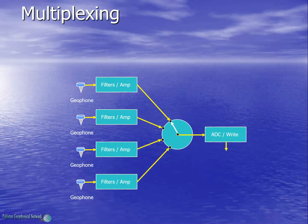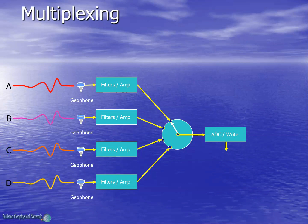We will now see what is multiplexing. For simplicity, we consider a seismic recorder of only 4 channels. The geophones are connected to their respective filters and amplifiers, which in turn are connected to the multiplexer. These are the 4 traces which will be digitized, labeled A, B, C, and D. The time moves from right to left for each trace — that is, each trace starts at right and ends towards the left.